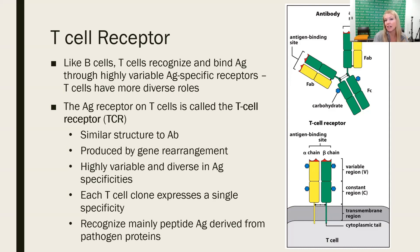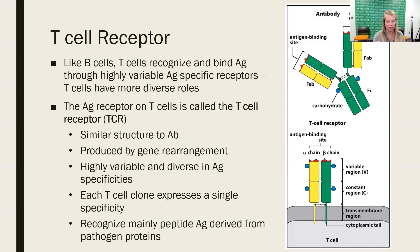When we looked at B cell effector functions, essentially they could become plasma cells and make antibodies with that same antigen specificity. T cells, however, do a whole lot of other things, but it all begins with the T cell receptor recognizing antigen. We call the T cell receptor a TCR — that is the abbreviation typically utilized.